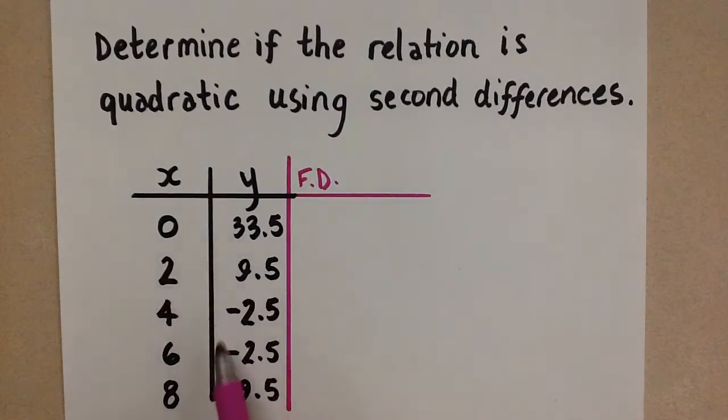So here I have a given table of values. We have to first ensure before we do differences that all of the x values are increasing or decreasing by the same amount. So here you see that all the x values are increasing by 2, so we are okay to proceed with this test.